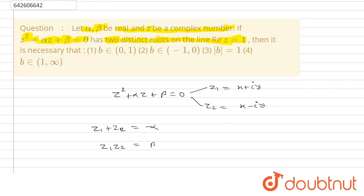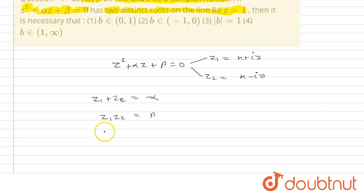So this will be x plus iota y multiplied by x minus iota y equals beta.